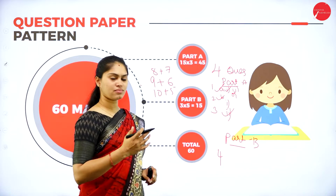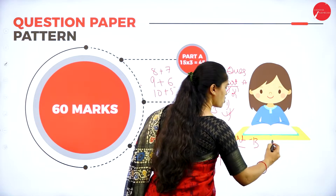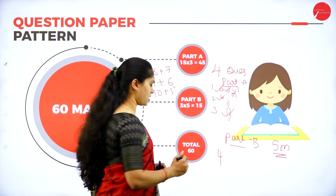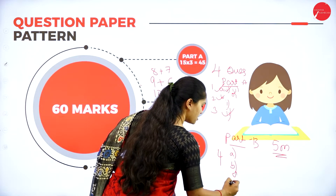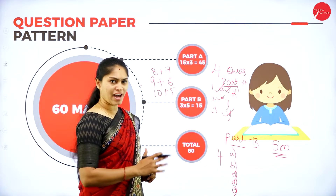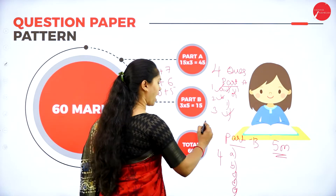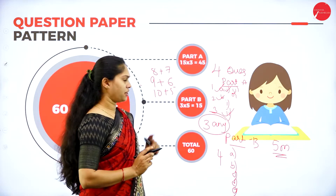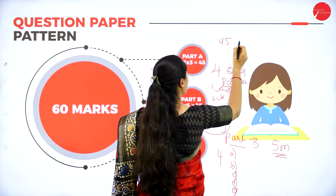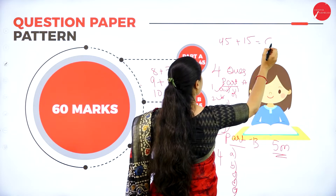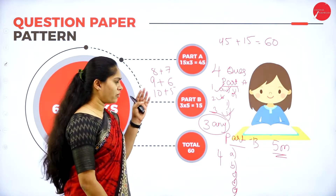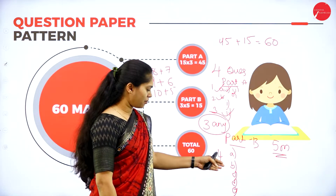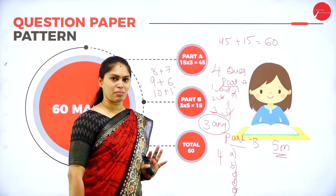Part B is Question 4, which consists of 5 short-answer questions — A, B, C, D, and E — each worth 5 marks. You need to answer any 3 out of 5, giving 3 into 5 equals 15 marks. So the total is 45 marks from Part A plus 15 marks from Part B, equalling 60 marks.